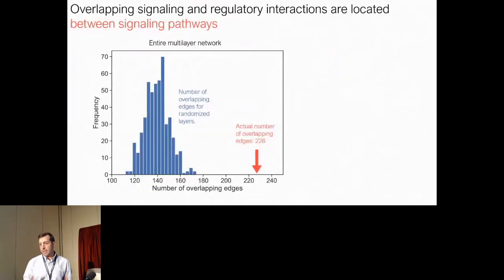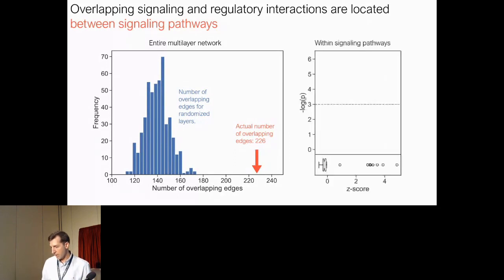To understand a little bit more this interplay between signaling and regulation, we look at the edge overlap between the two layers. When we do that for the entire network, we find a significant overlap between the two layers. Whereas if we do it for each separate pathway, we see that for most of the pathways...